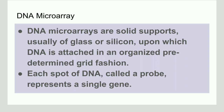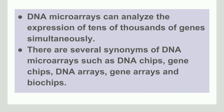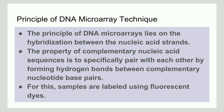Each spot of DNA is known as a probe, and this represents a single gene. The diameter of each sample spot is less than 200 microns, and there can be tens or thousands of such spots. Other names used for microarray include DNA microarrays, DNA chips, gene chips, DNA arrays, gene arrays, and biochips.